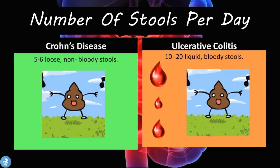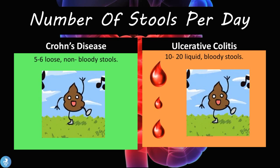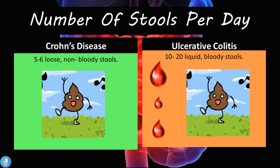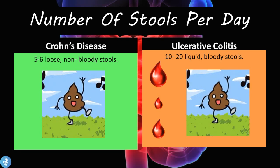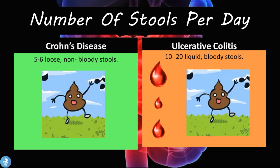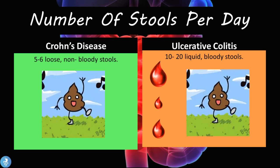Regarding the number of stools per day: in Crohn's disease there are usually five to six loose, non-bloody stools, while in ulcerative colitis we can have 10 to 20 liquidy and bloody stools.